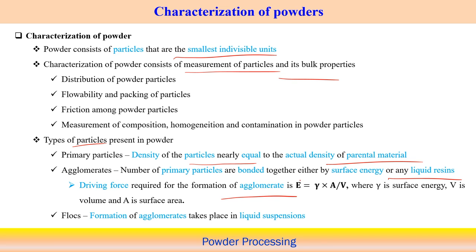The driving force for agglomerate formation is surface energy multiplied by the area-to-volume ratio — it depends more on the area-to-volume ratio of the particles. Surface energy is the driving force for whether particles form agglomerates. Flux refers to agglomerate formation taking place in a liquid suspension. These are the different particle types we can identify in a powder.